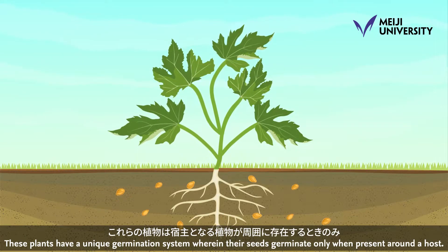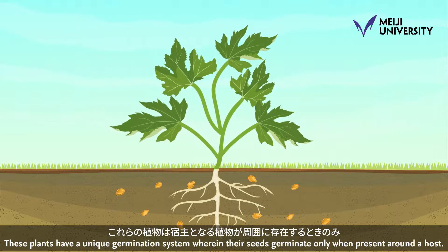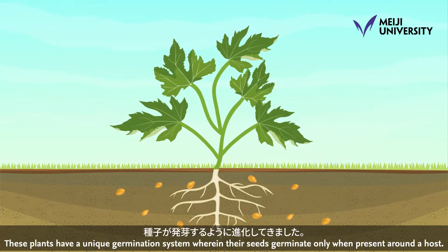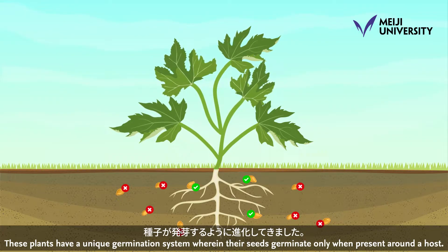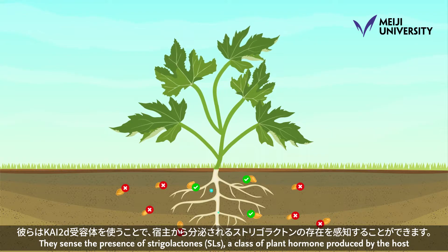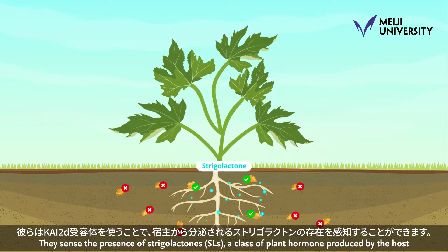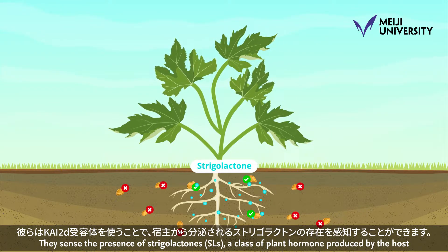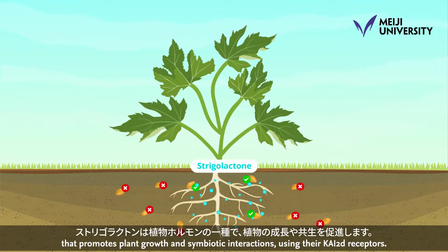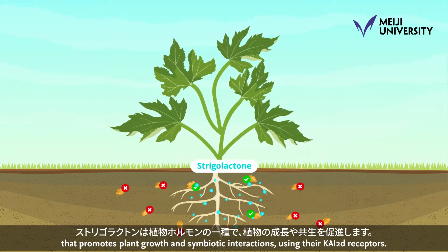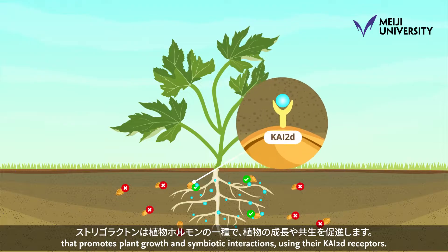These plants have a unique germination system, wherein their seeds germinate only when present around a host. They sense the presence of Strigolactones (SLs), a class of plant hormone produced by the host that promotes plant growth and symbiotic interactions, using their CHI2D receptors.